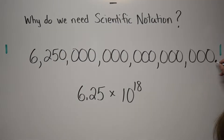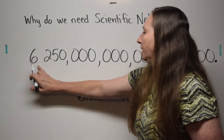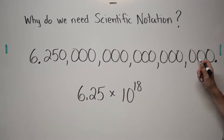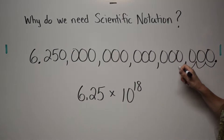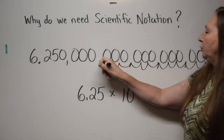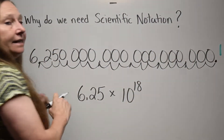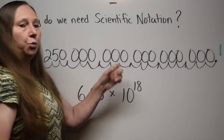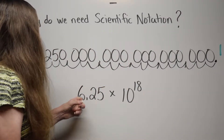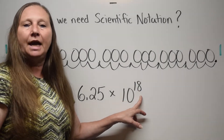The decimal is over here. We're going to count the jumps until the decimal point has only one number in front of it: 1, 2, 3, 4, 5, 6, 7, 8, 9, 10, 11, 12, 13, 14, 15, 16, 17, 18 jumps. That's why this number correctly written in scientific notation is 6.25 times 10 to the 18th power.